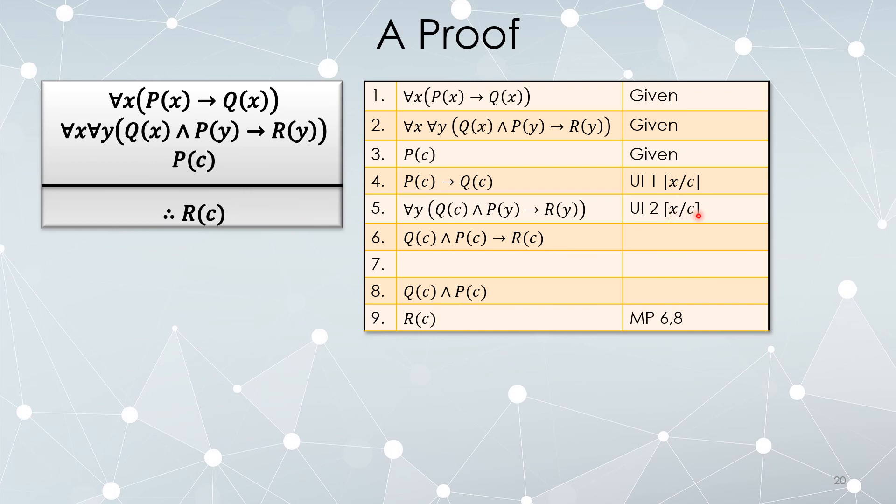Now, how can I get Q(c) and P(c) implies R(c)? I'll give you a hint. It's going to come from this line right here. Universally instantiate the variable y using the same variable c.